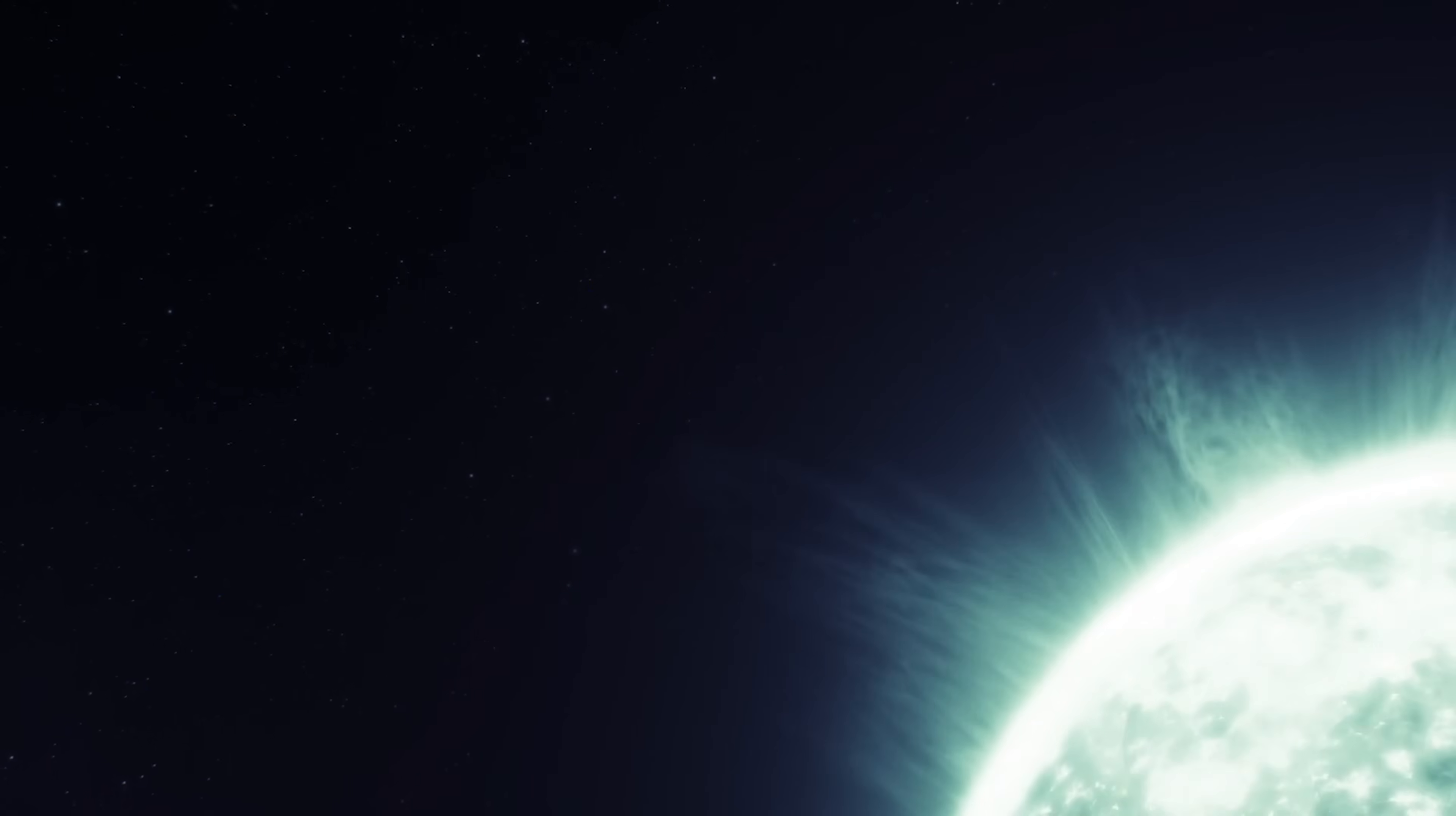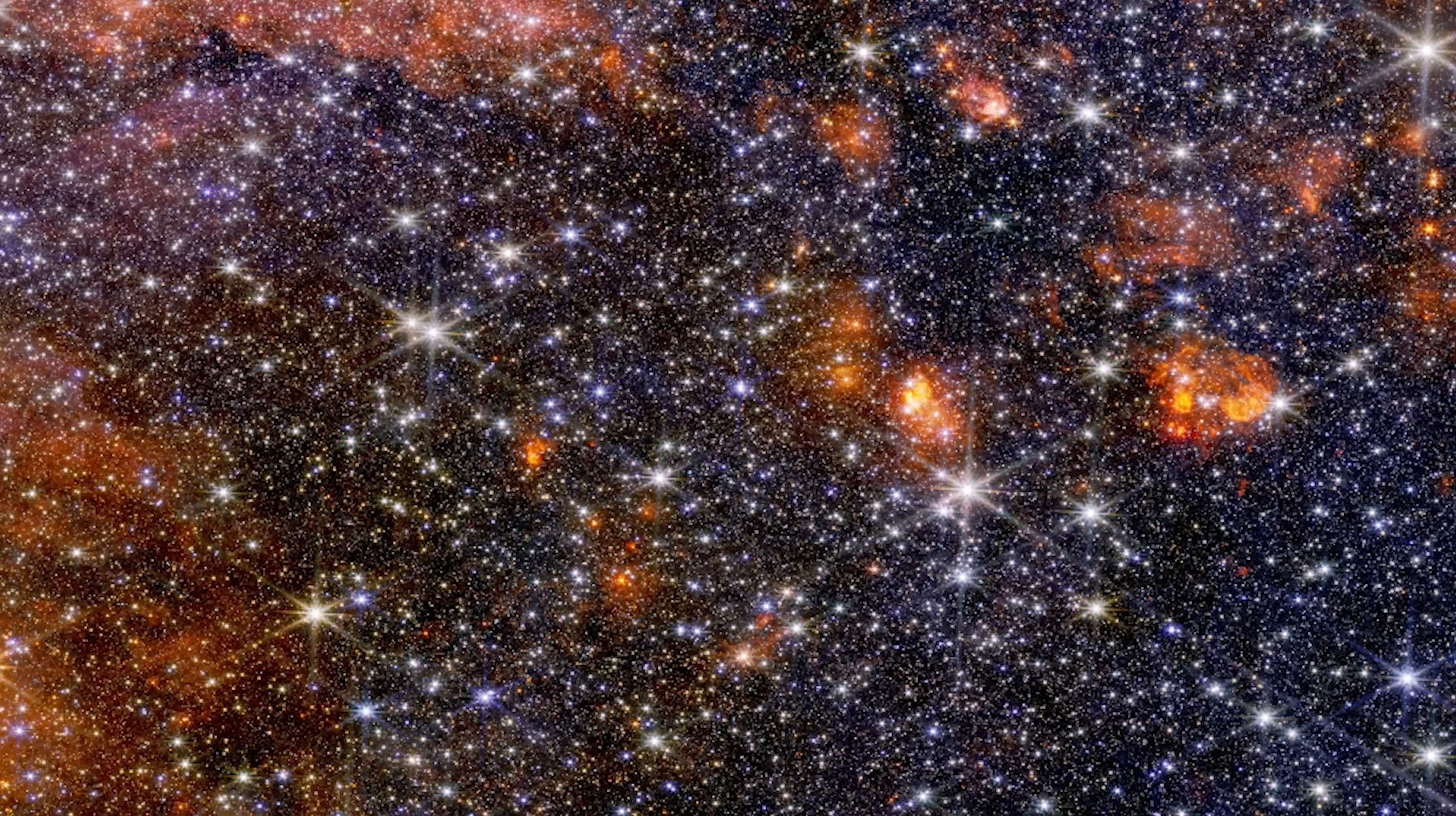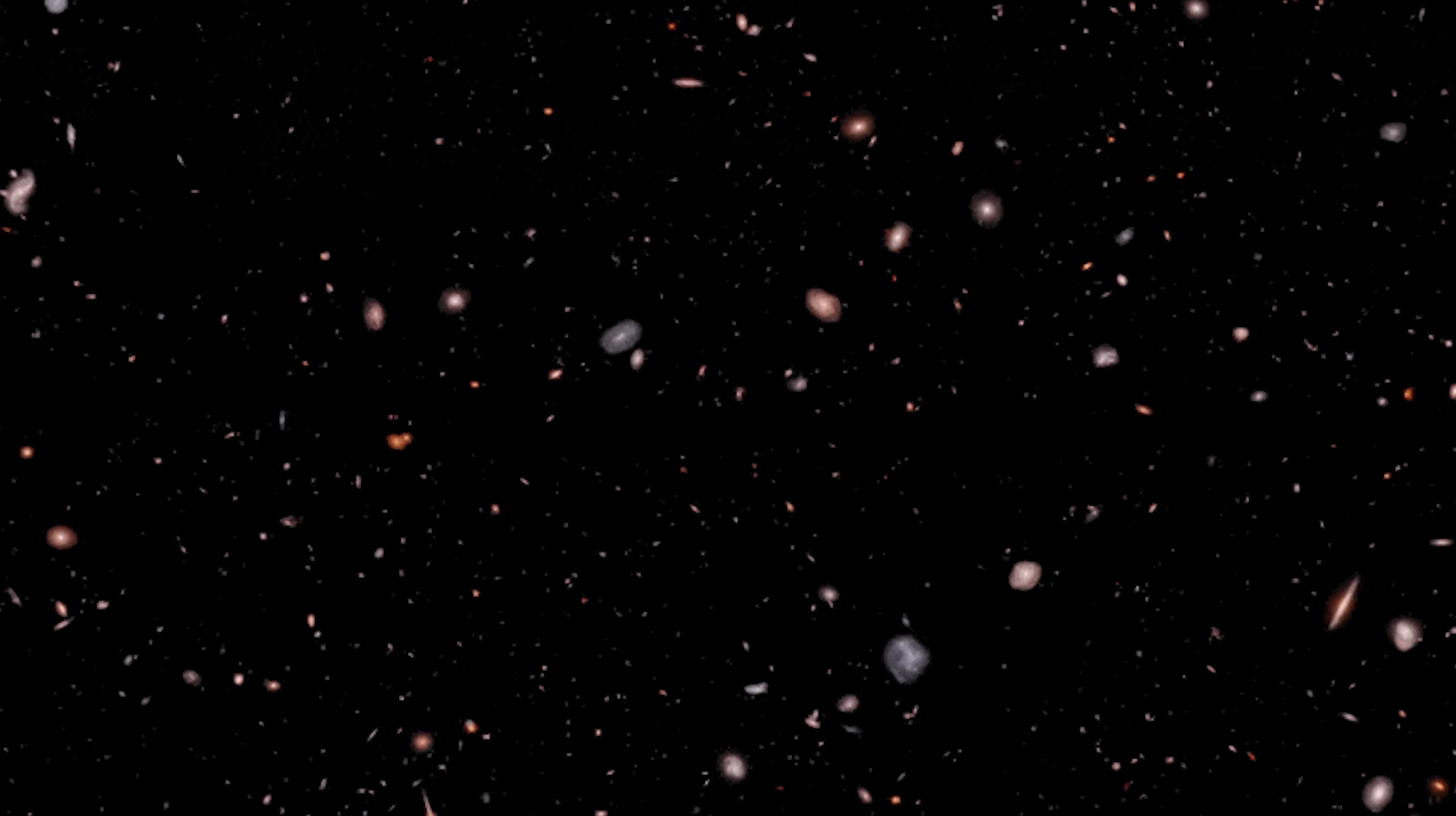This suggests stars were forming, dying, and enriching their environment far earlier than our models allow. In other words, galaxy evolution may have started much sooner and progressed much faster than we thought. For decades, astronomers believed galaxies like this should be extremely rare. But Webb is revealing something unsettling. These ancient, compact, intensely bright galaxies, sometimes called little red dots, are appearing again and again in JWST surveys. MOMZ-14 may hold the current distance record, but it likely won't keep it for long.